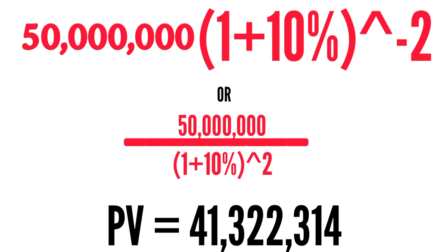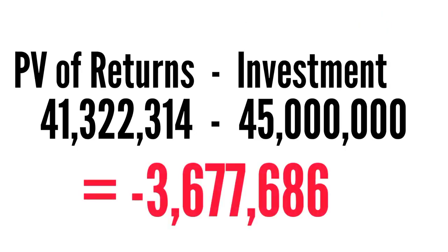322,314 naira, and your investment was 45 million. So you can see that it's a negative NPV, as in the net present value. Net, when you set off income and expenses, or returns and investment, when you net them off. So this negative of 3.67 million is telling you that this investment is not really a good one.